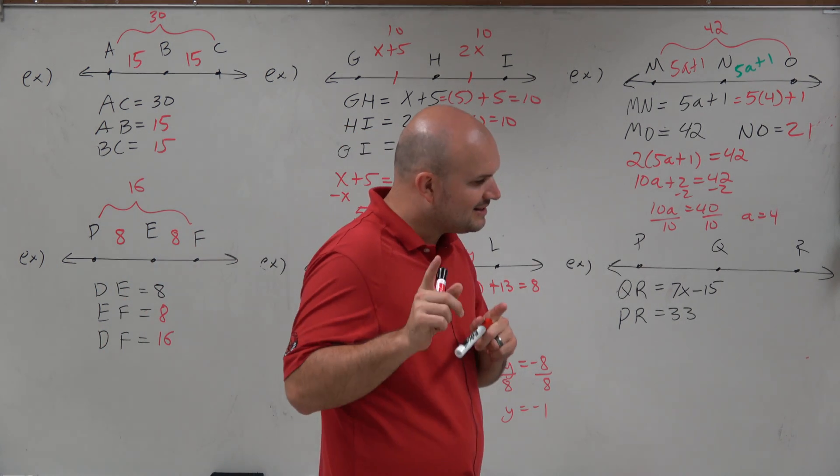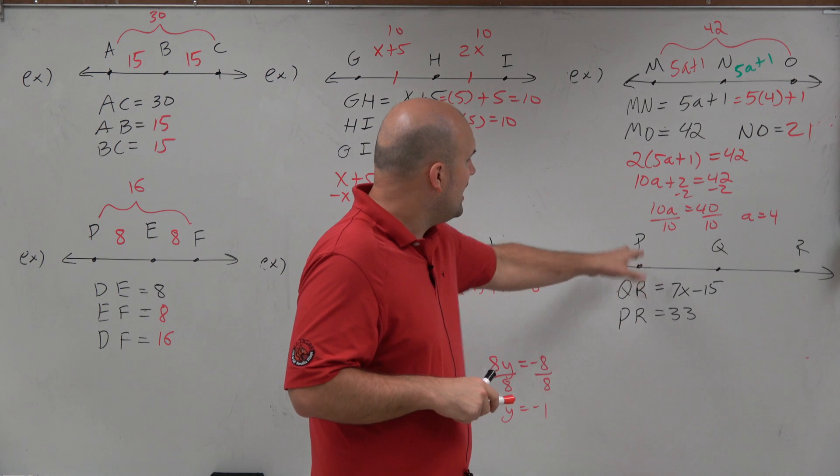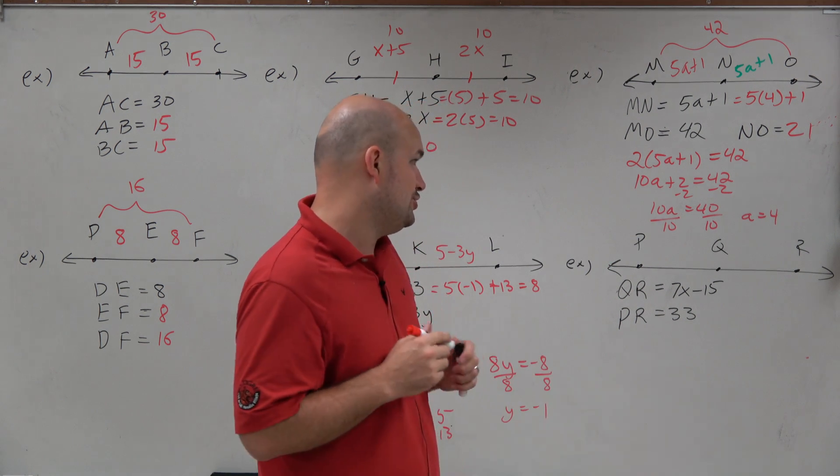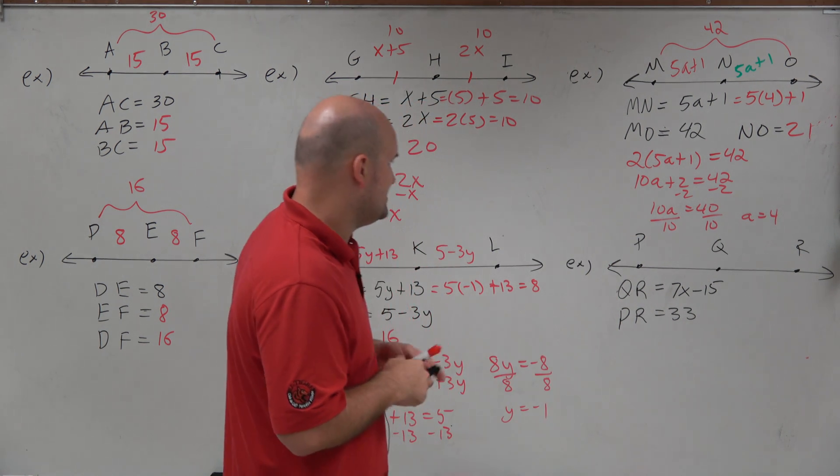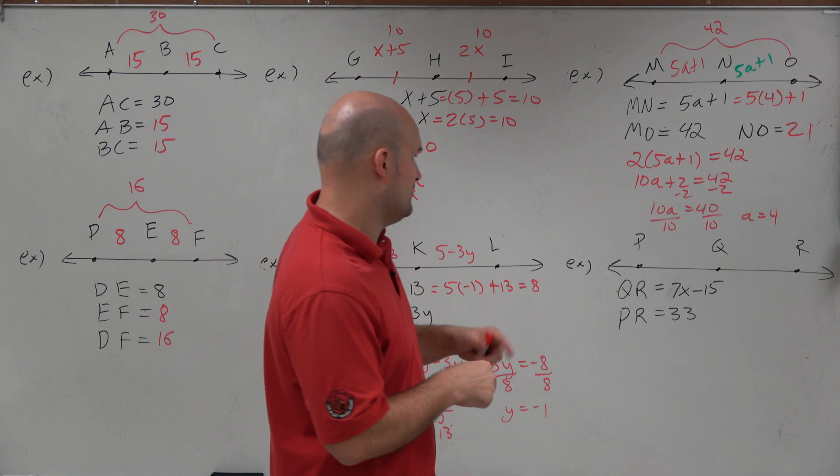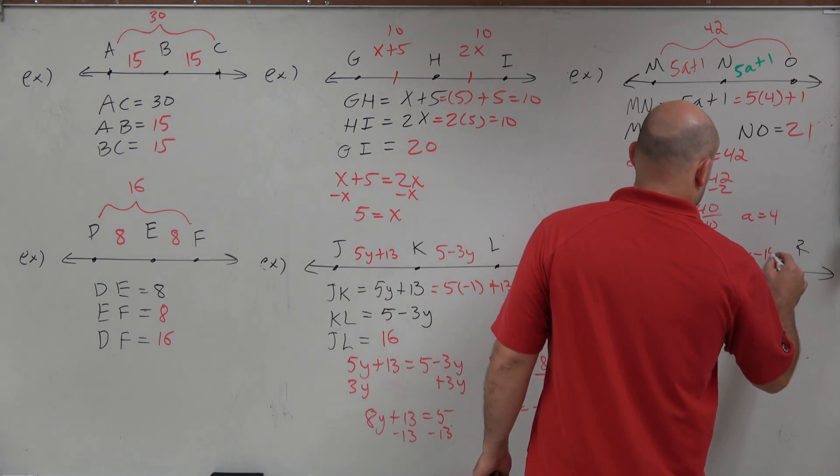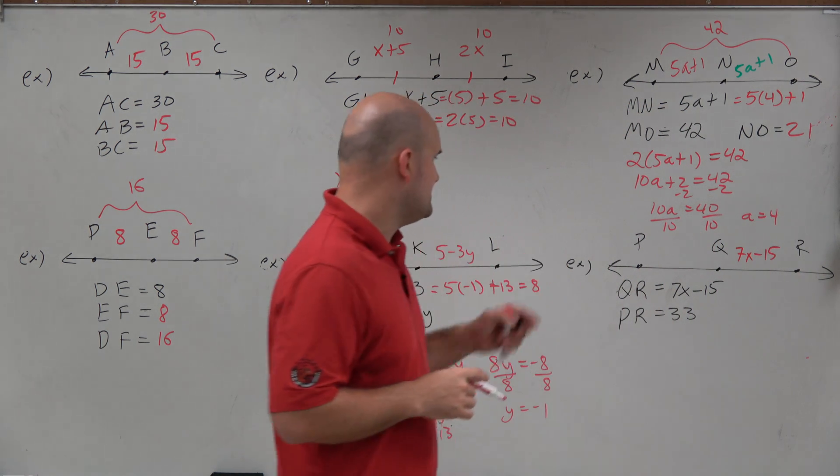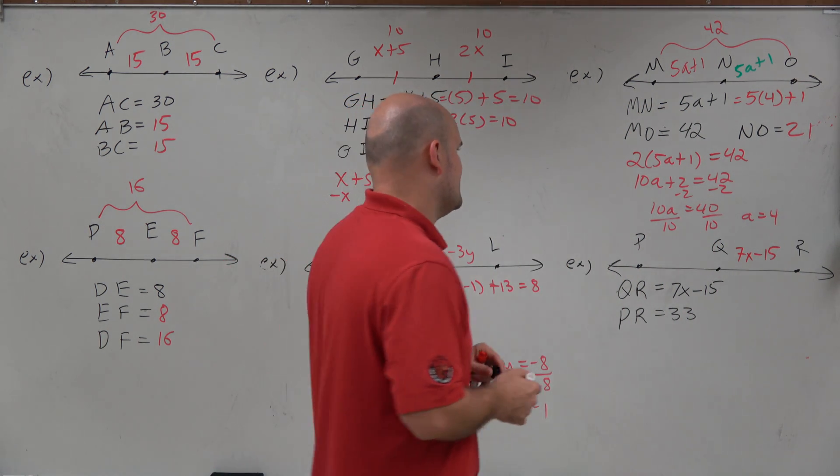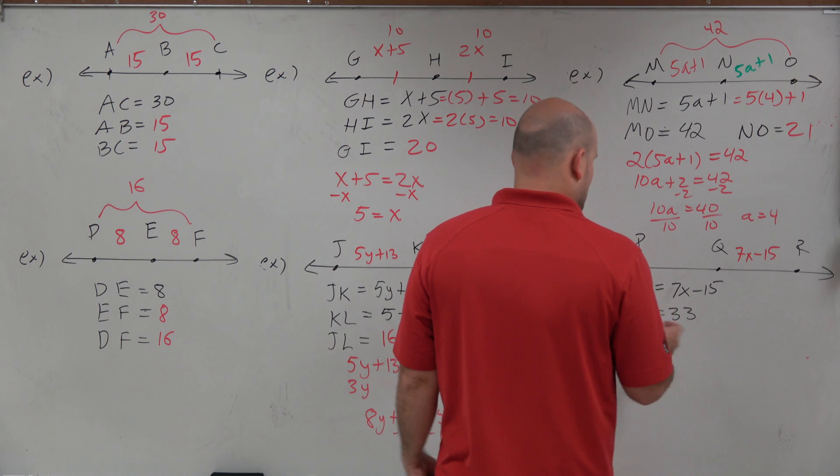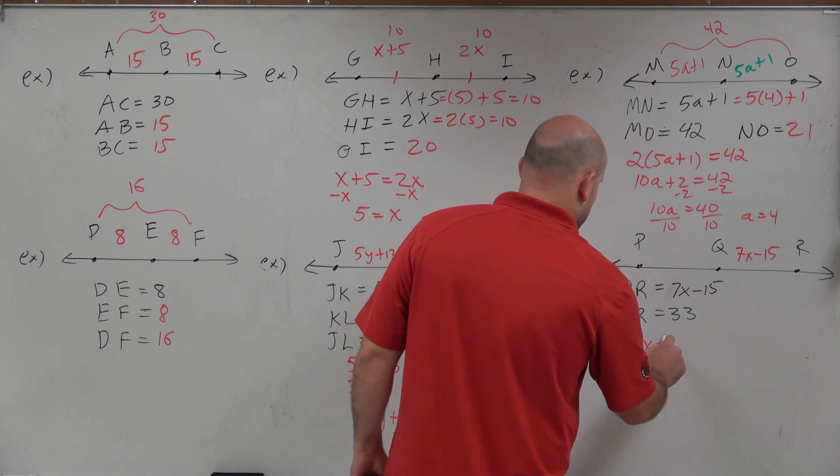Ah, I think I do have those. Yes, I do. OK. In this example, we have PQ, QR. So in this example, it's very similar to the other one. We have QR is going to be 7x minus 15. And this one, we have PR, which is the distance from both of them, is equal to 33. So we're going to do the same thing. We have 7x minus 15. Actually, let's do it the other way.